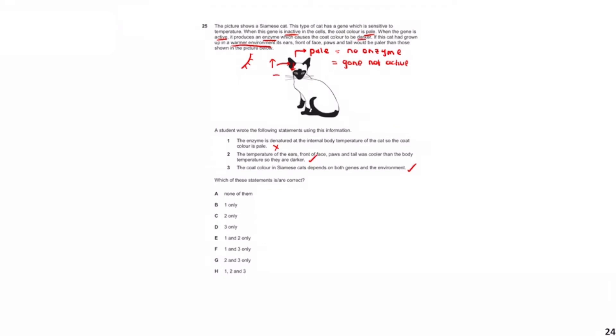Statement two says the temperature of the ear, front of face, paws, and tail was cooler than the body temperature, so they are darker — this is correct, because if those areas are cool the gene is active and produces pigment, making them darker. Statement three says coat color in the Siamese cat depends on both gene and environment — this is also correct, because without the gene there's no enzyme for pigmentation at all, and the environment controls the expression of that gene.